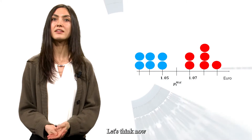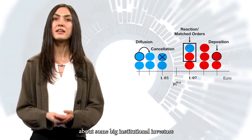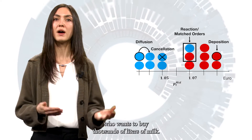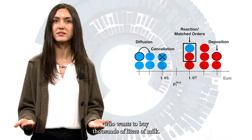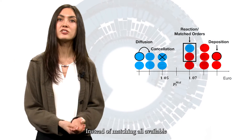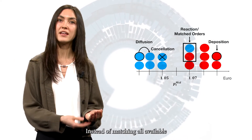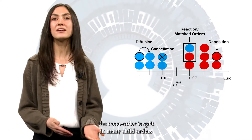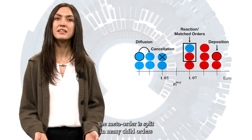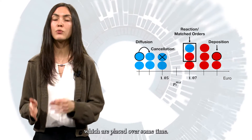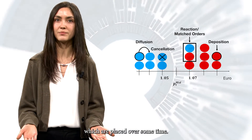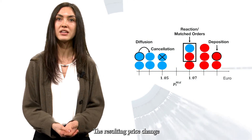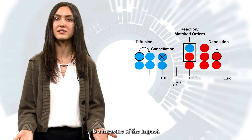Let's think now about some big institutional investor who wants to buy thousands of liters of milk. Instead of matching all available sell orders in the order book at once, the meta-order is split into many child orders which are placed over some time. The resulting price change is a measure of the impact.